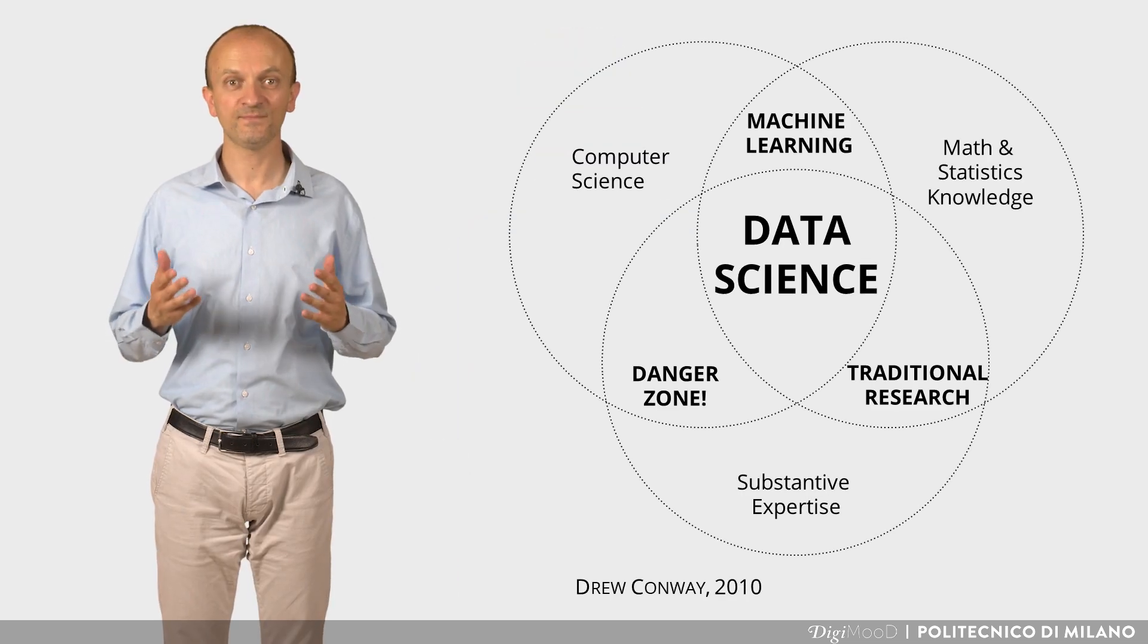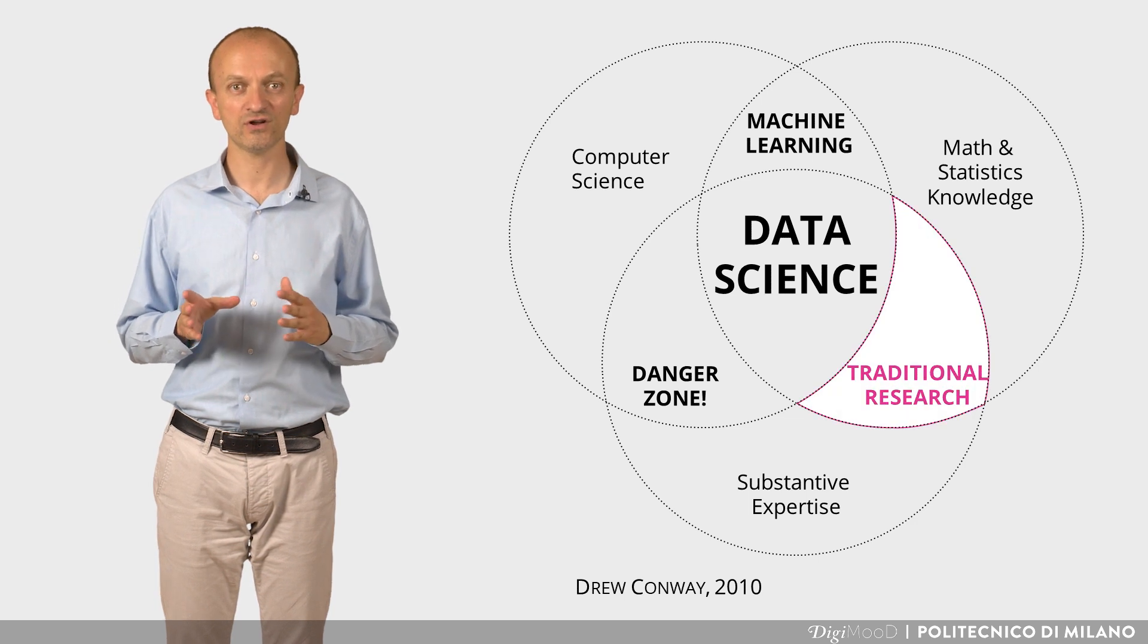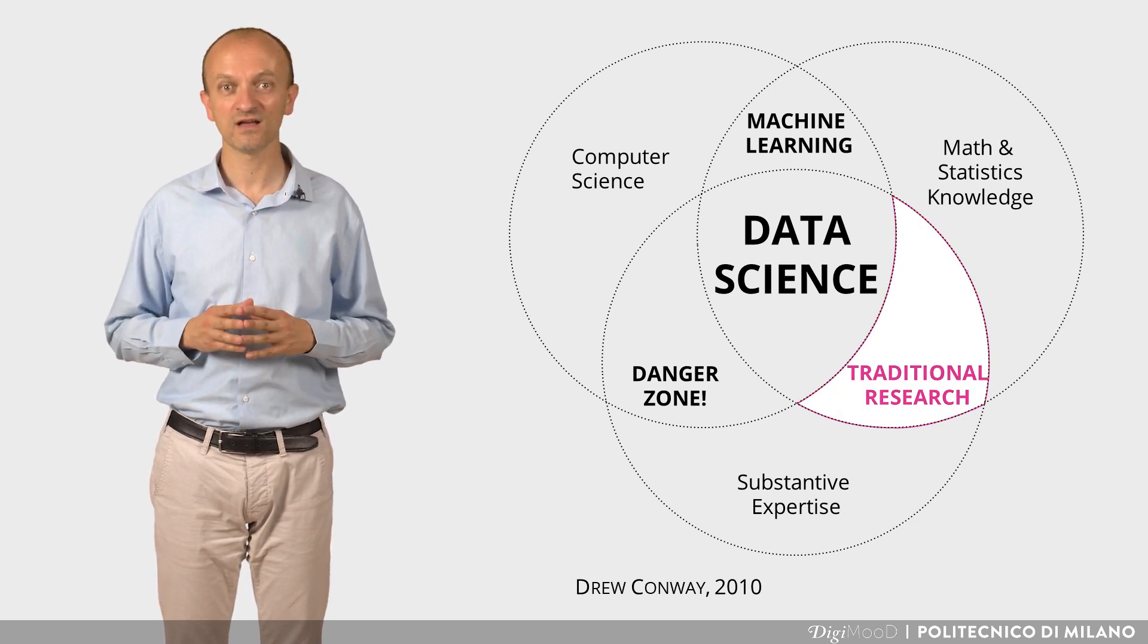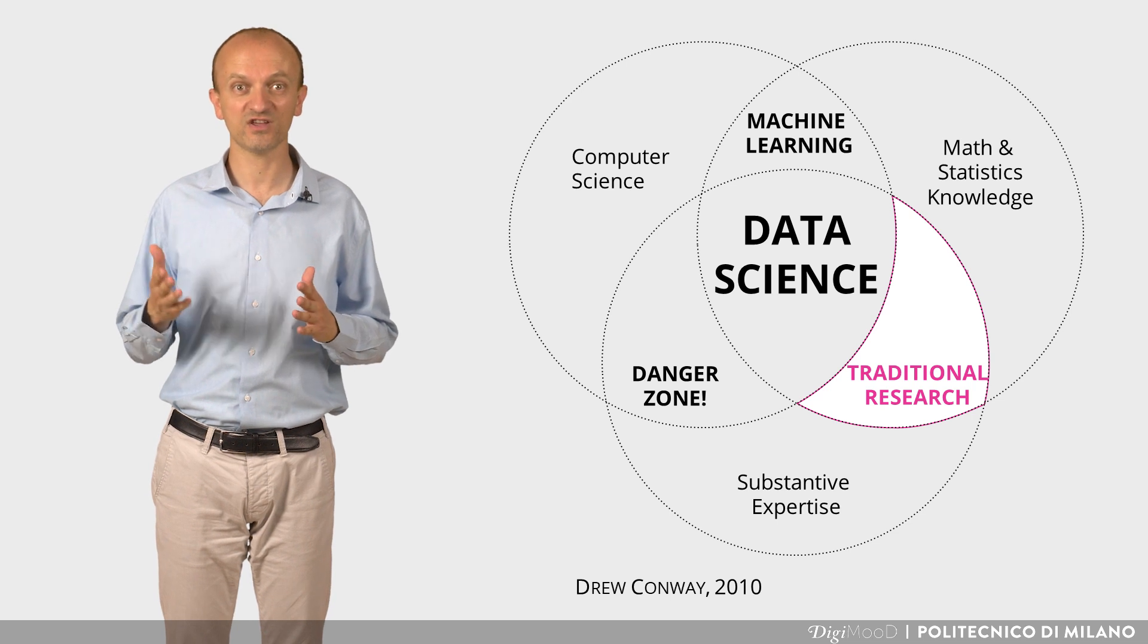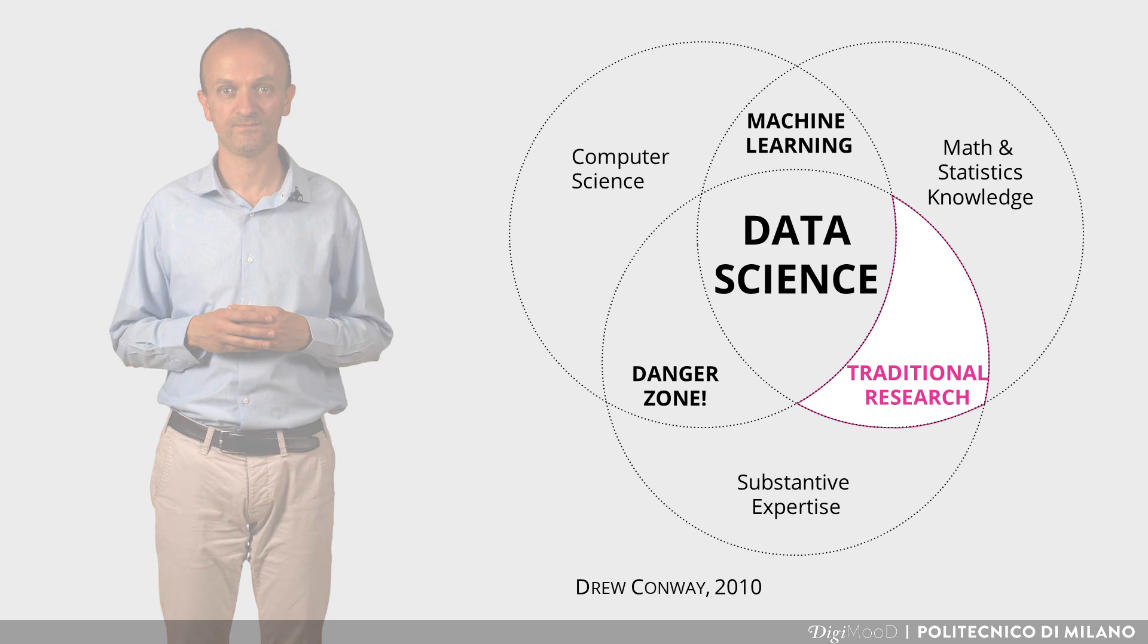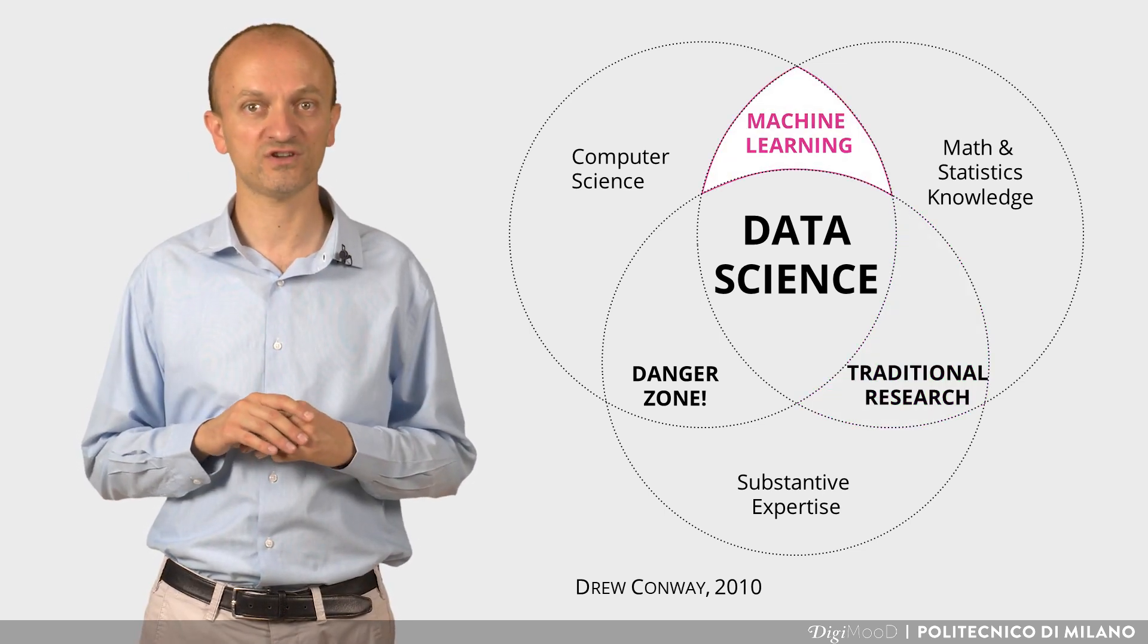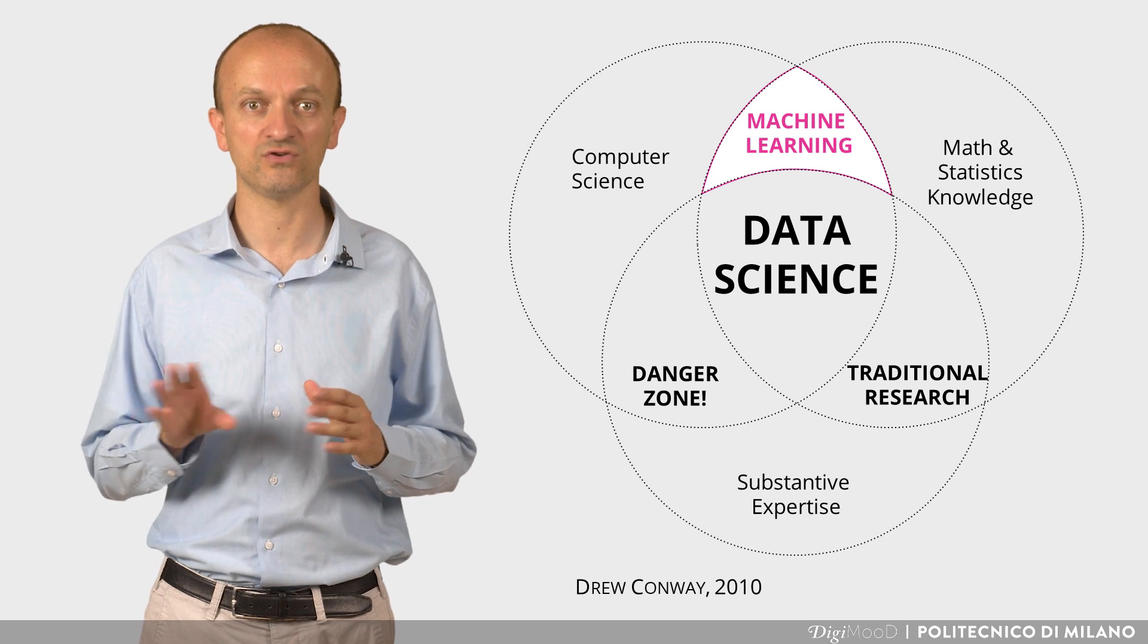To this end, a data scientist must be polyglot. As a traditional researcher, he must have deep knowledge in mathematics and statistics, as well as substantive expertise in a given industry or domain, for appropriately applying the methods. On the other hand, he must also master computer science, and in particular machine learning methods.